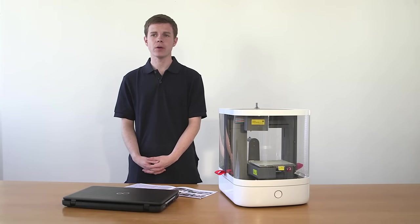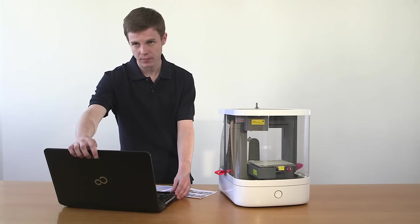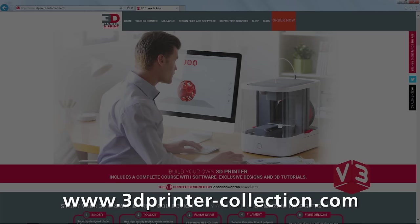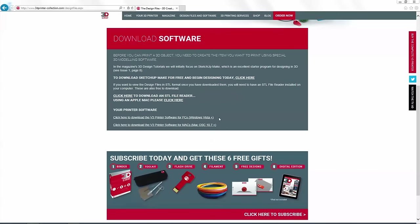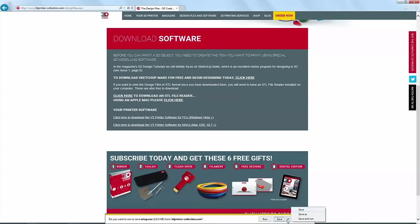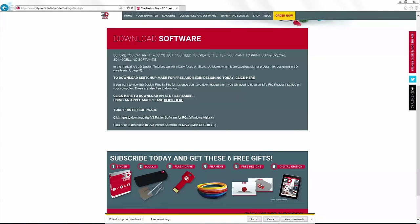The next step is to download the software and connect the printer to a computer. Visit www.3dprinter-collection.com to download the 3D Create and Print software. Make sure that your PC or Mac meets the minimum specification requirements. To download and install for Windows, double-click the Windows version, then choose where to save the program and whether to create a desktop shortcut. Once selected, the program will download.